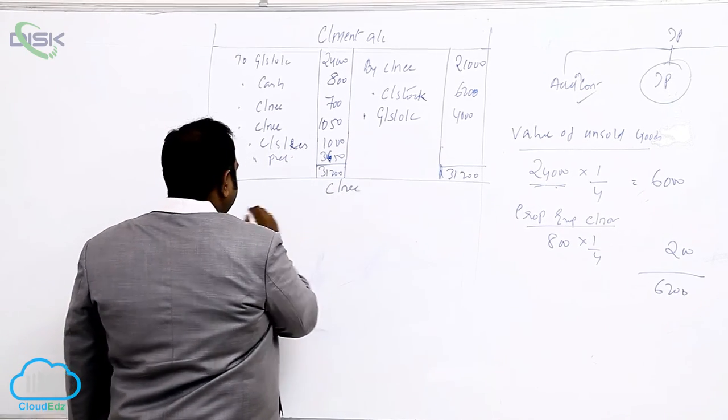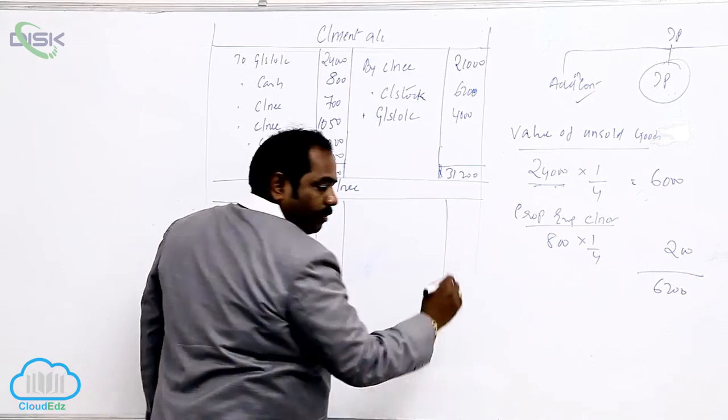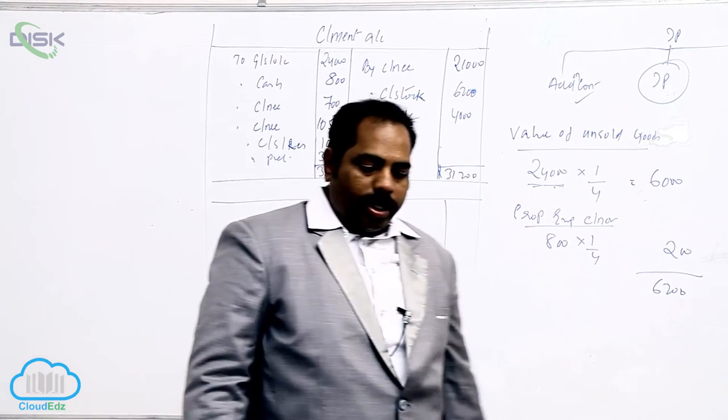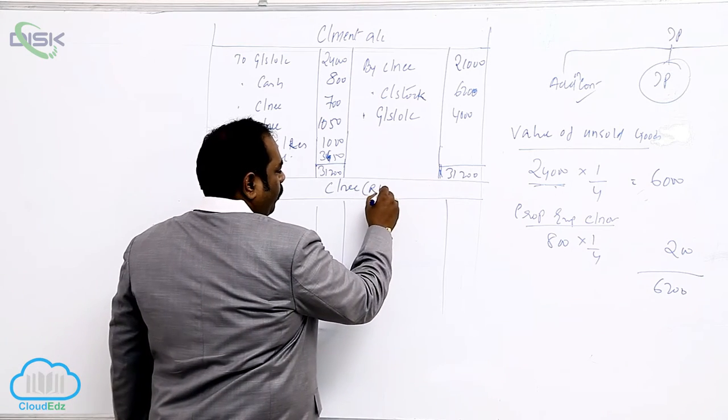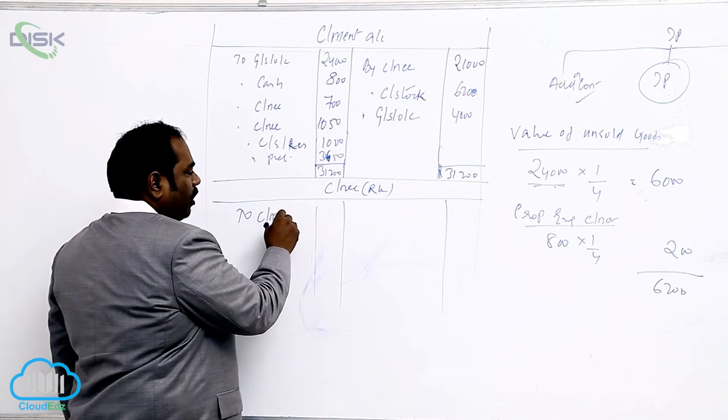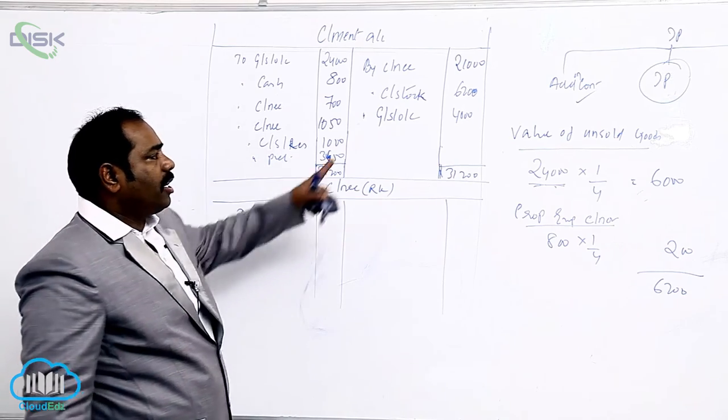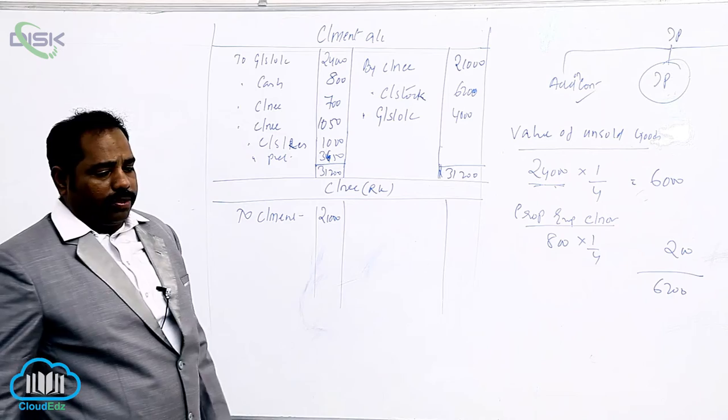Next, open consignee account. Who is the consignee here? Rama Krishna of Ramayampit. So consignee is RK. To consignee in credit side, debit side of consignee's account. To consignee is for sales. For how much is the entire stock sold? 21,000. He sold three-fourths of the stock for 21,000.